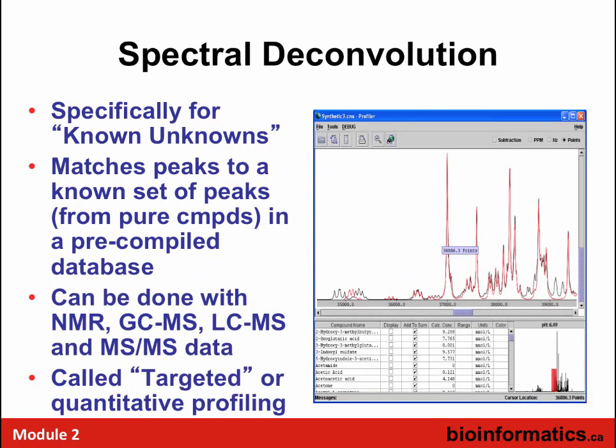The best way to deal with known unknowns is a technique called spectral deconvolution — essentially matching peaks to a known set of peaks from a database. You can do spectral deconvolution for NMR, GC-MS, LC-MS, MS/MS, and even FT-IR. When you do spectral deconvolution, it becomes a targeted technique because you're looking for things within your library. If done correctly, you can not only identify but also quantify.